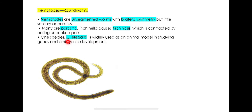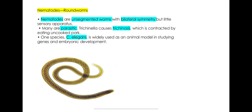Another species is C. elegans. This organism is used extensively in molecular studies — including the study of genes and embryonic development.